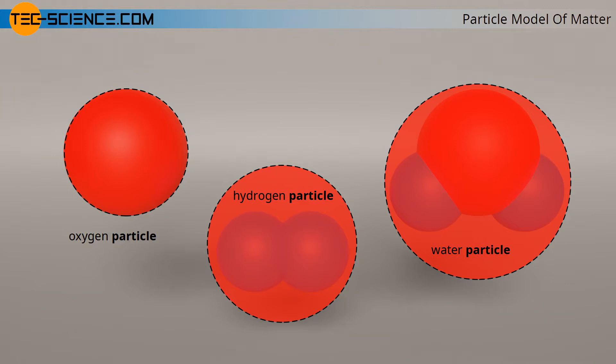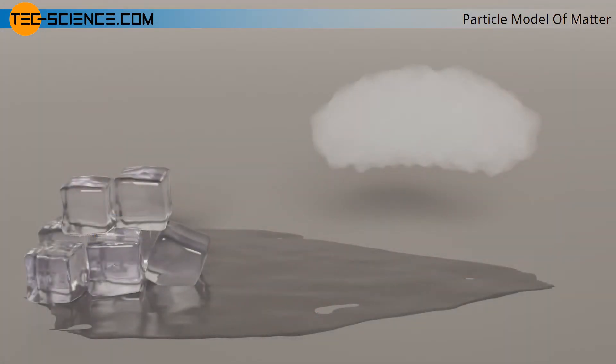This idea about the structure of matter consisting of particles is called the particle model of matter. The particle model can be used to illustrate why a substance behaves differently depending on temperature and why its atomic structure changes. Depending on how strong or weak the binding forces between the individual particles of a substance are, basically three different states of matter or states of aggregation are distinguished.